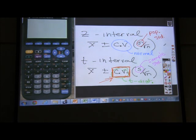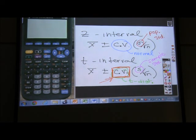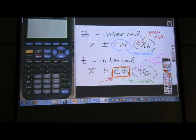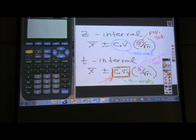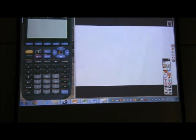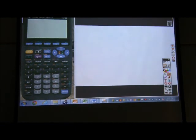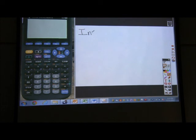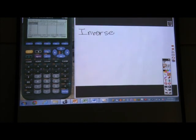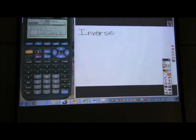Alright, so to find these critical values, how did we find these critical values? What function on my calculator did I use? Yes, Richard? You used your inverse normal function. Excellent. Thank you, Richard. Good job, Richard. Alright, so we use inverse normal to find our z-critical values. So I'm going to use inverse t to find my t-critical values.